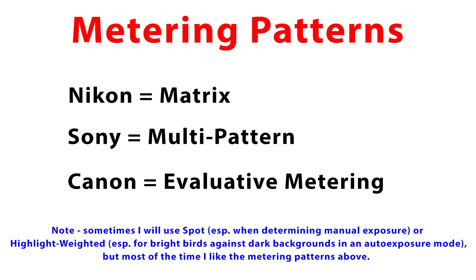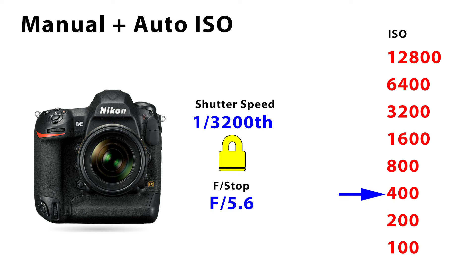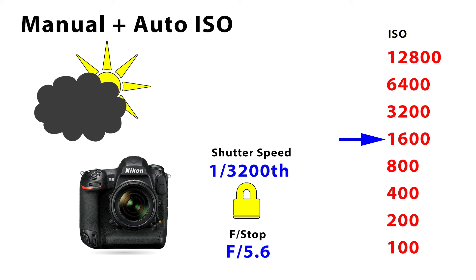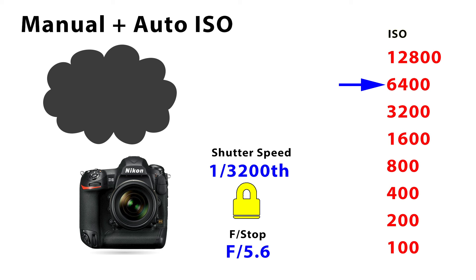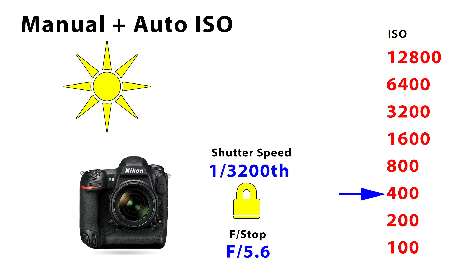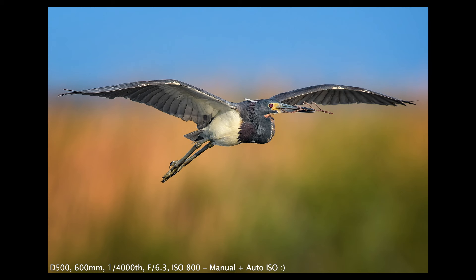Number five: exposure mode. For metering patterns, with Nikon I almost always use matrix metering, and for Sony it's almost always multi-pattern metering. For exposure modes, I use both auto exposure and full manual for bird-in-flight shots depending on circumstances. For auto exposure, I use manual with auto ISO — this lets me lock in the f-stop and shutter speed I want while the camera floats the ISO for proper brightness. I like this when dealing with challenging light levels, like the sun peeking in and out of cloud cover. I use this mode about 60 to 70 percent of the time, sometimes with exposure compensation.